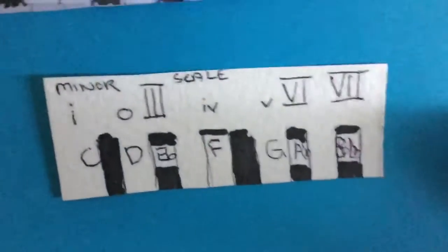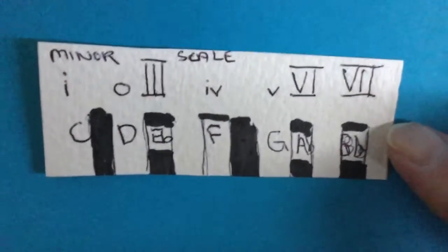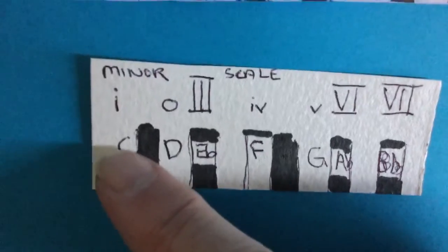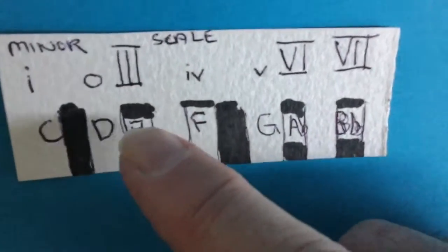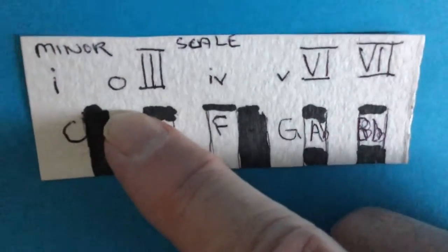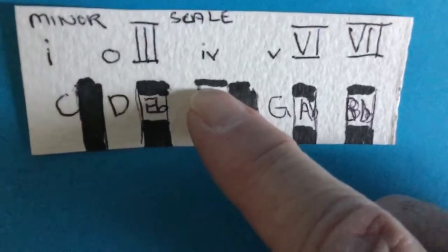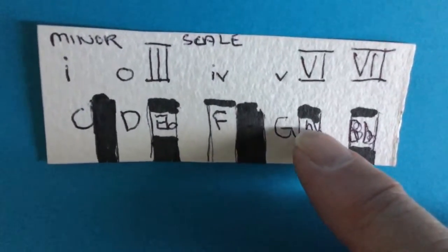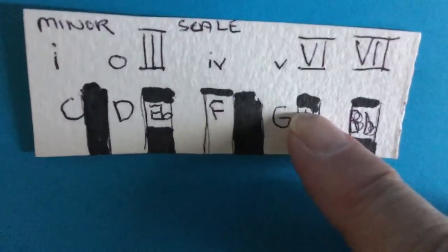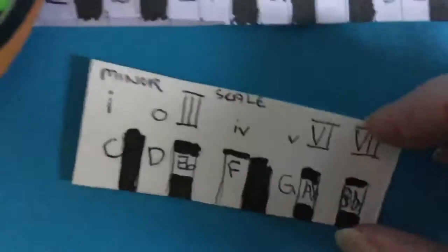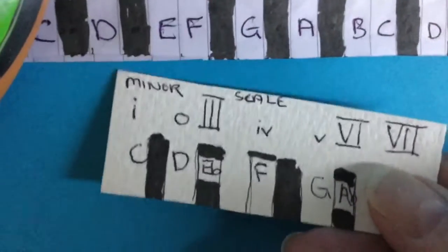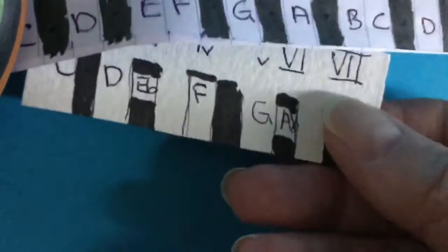Well, I hear you say, how does this work for the minor? I've got a card here which has the minor scale. C minor is: C, D, E flat, F, G, A flat, and B flat. So that's the C minor scale. Similarly, if you slot it in and we wanted to change that to the E minor scale, we would very simply and easily do that.